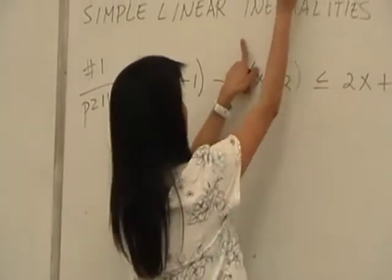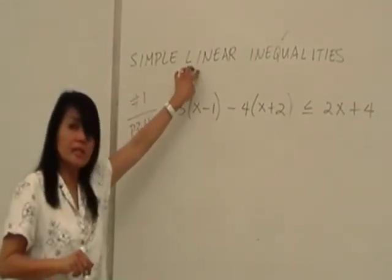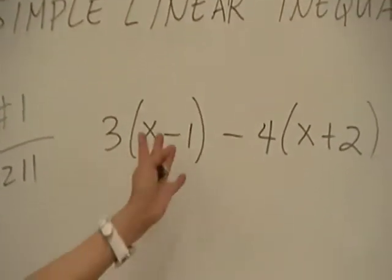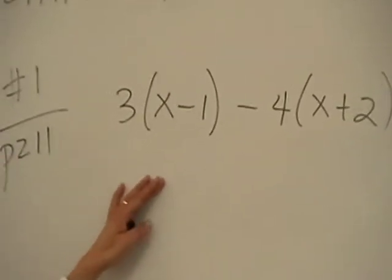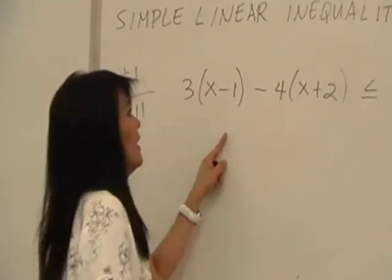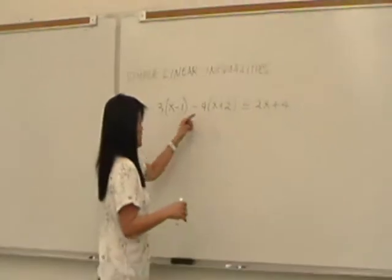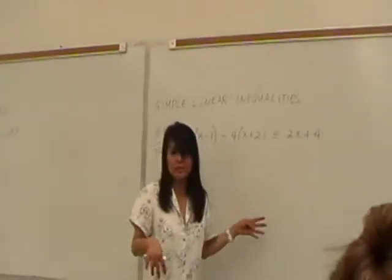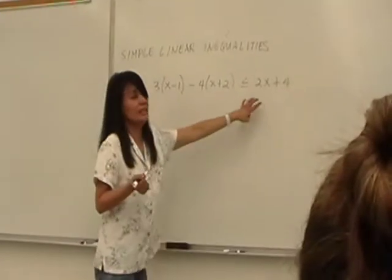We explained the word 'inequality.' What else should we explain? Linear — we did this yesterday in class for equations. How will you know on your test that you're dealing with a linear inequality and not a non-linear inequality? The degree is 1. No fractions with a variable underneath, no degree 2, no radicals. Linear means degree is 1.